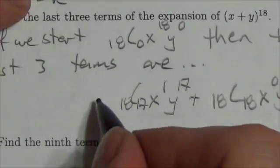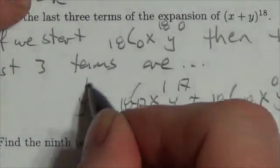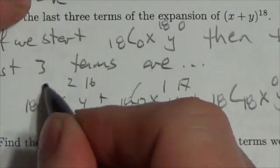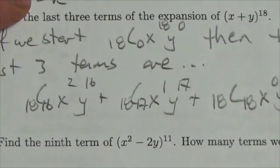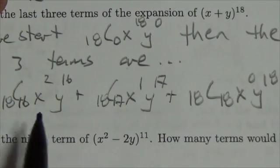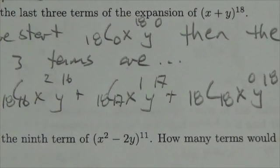And then the term before that would be 18 choose 16, x squared, y to the 16. So right there, those would be the last three terms. Now we can evaluate that, but once again, this is just calculator work, so I'll assume that you can do that.